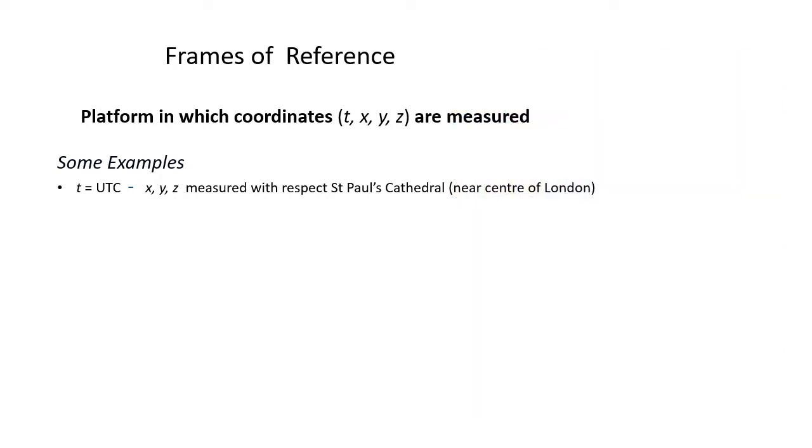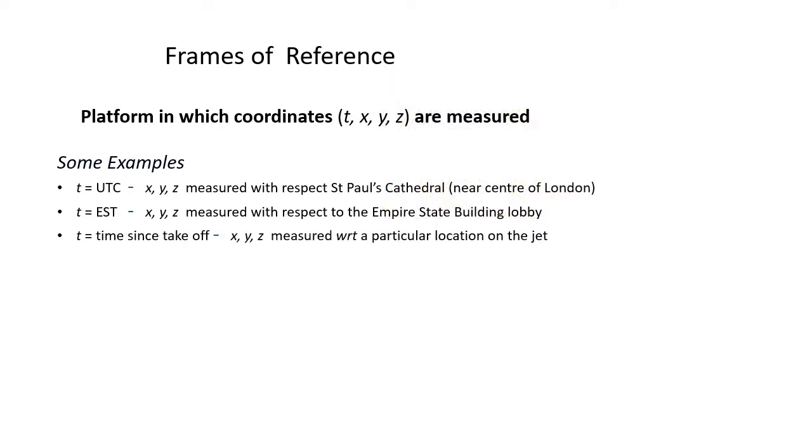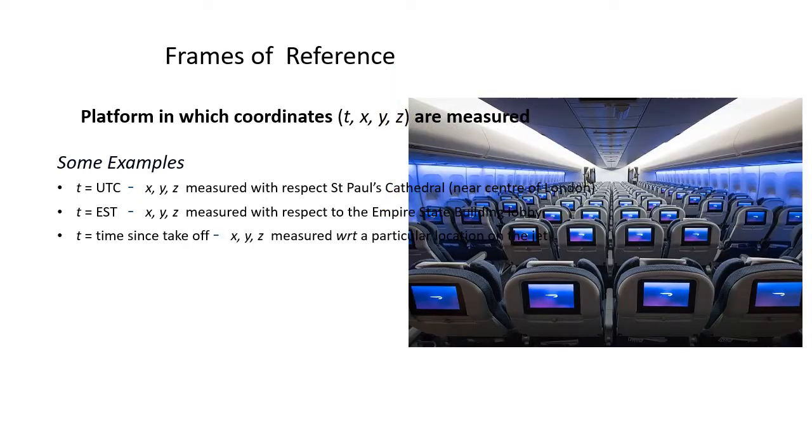If we had New York, we might have t equals Eastern Standard Time, and x, y, z is measured with respect to the Empire State Building lobby. And if it was on a passenger jet, t might be the time since takeoff, and x, y, z measured with respect to a particular location on the passenger jet, for example, the cockpit.